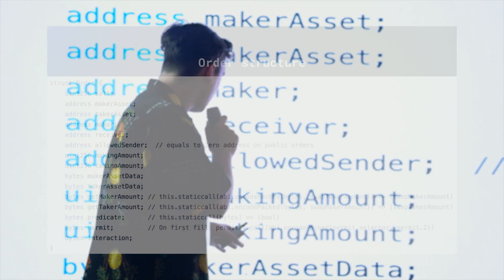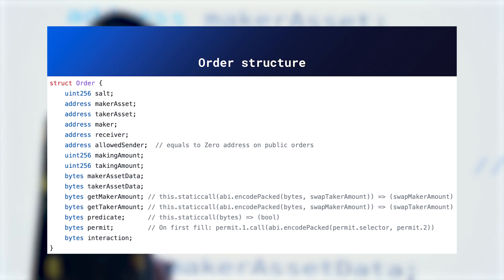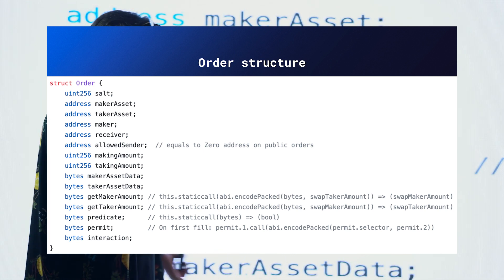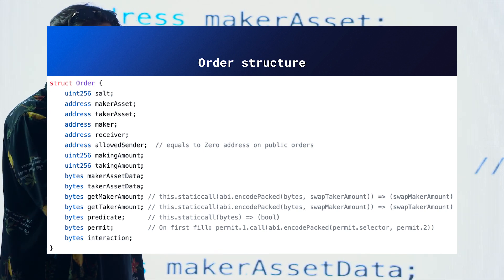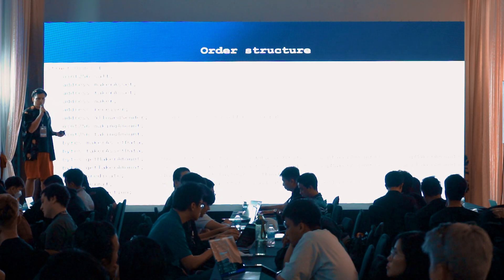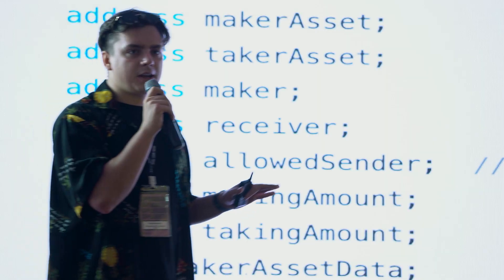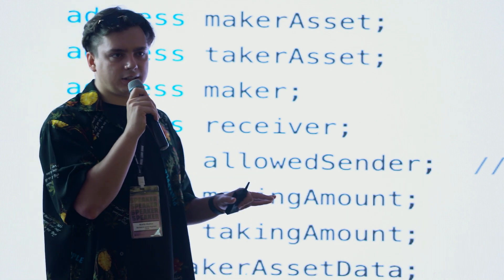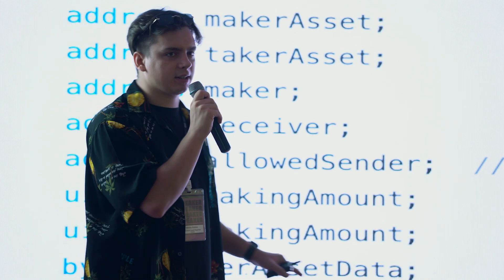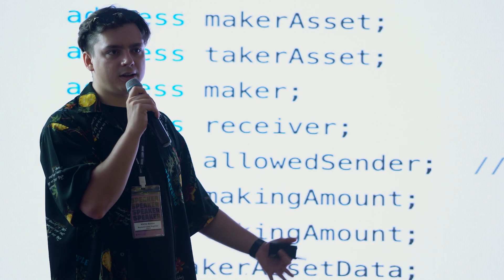I also want to highlight the predicate, permit, and interaction fields — these three parts are pretty important. Permit allows you to support permits on most Ethereum ERC20 tokens, so if a token supports permit, you don't need to use gas to make approvals on the smart contract; you can just sign a structure instead. Predicate is a cool feature that allows you to specify additional conditions — we have multiple default conditions like timestamp constraints. Interaction is like a callback: you can use interaction to do some operations with funds before they are transferred to the taker.